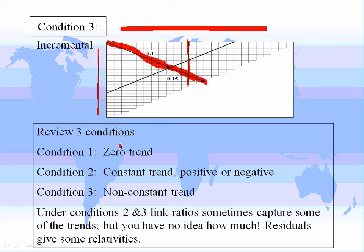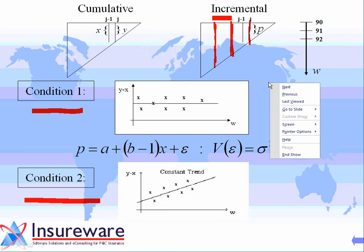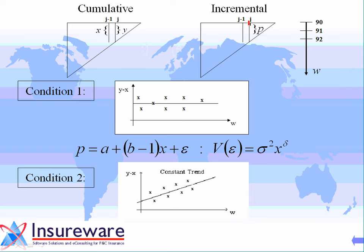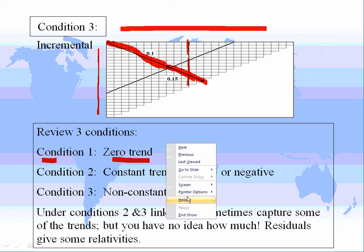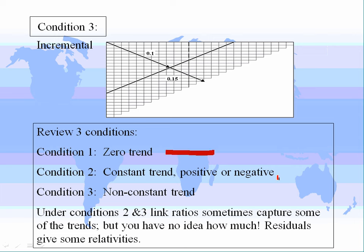In the previous video, we looked at condition 1, which was zero trend down the development years; condition 2, a constant trend; and now we're looking at condition 3. Data either satisfies one of these mutually exclusive conditions. If you had zero trend and were in the extended Linkratif family, you'd take the average of the incrementals — but that treats each development period as a separate problem, which it's not. Similarly, under condition 2, you'd measure the constant trend but again treat every period separately.